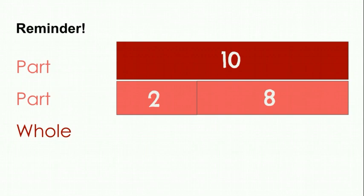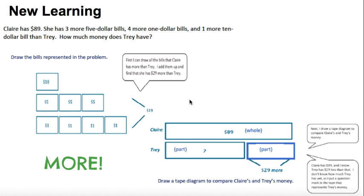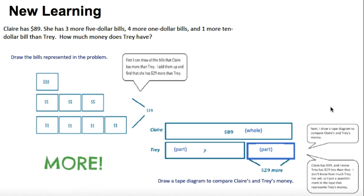Let's try the problem set today. In the new learning portion, we are solving a word problem about Claire and Trey. The key here is the word 'more.' Claire has $89. She has three more $5 bills, four more $1 bills, and one more $10 bill than Trey. How much money does Trey have? So we need to find how much more money Claire has first — that green underline right there is showing us how much more money Claire has.